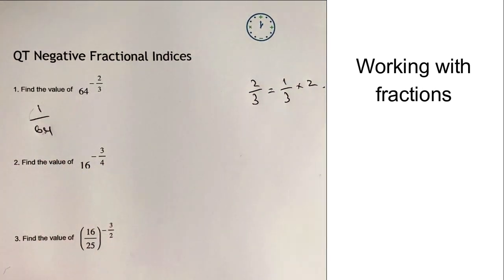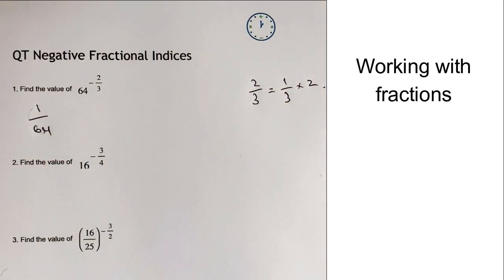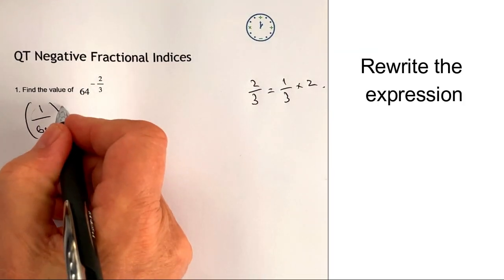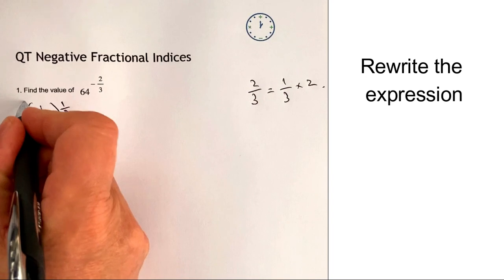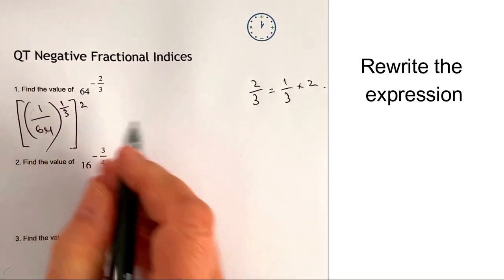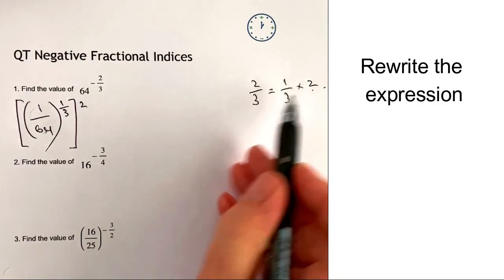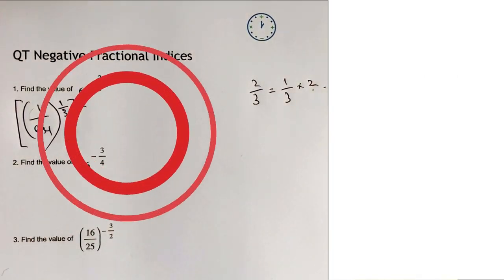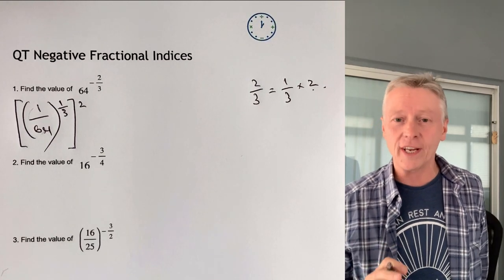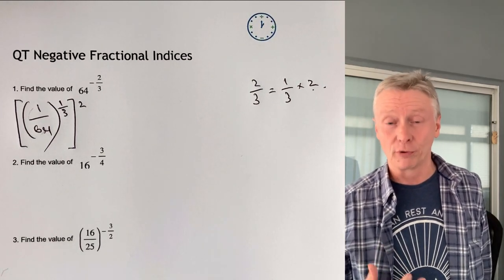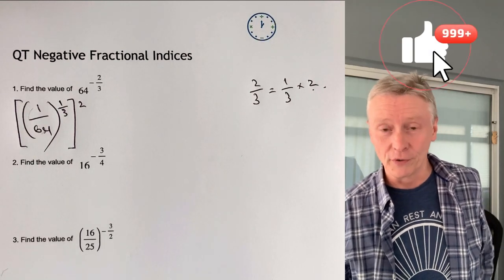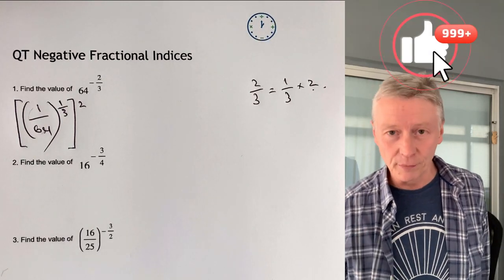I can use that fact when I'm dealing with this particular index because I can write this as to the power of 1 over 3, and then some nice big square brackets, and then square afterwards. Now the reason why it's much easier if I write 1 over 3 is because that means the cube root. It's the kind of index equivalent of writing the cube root of something.